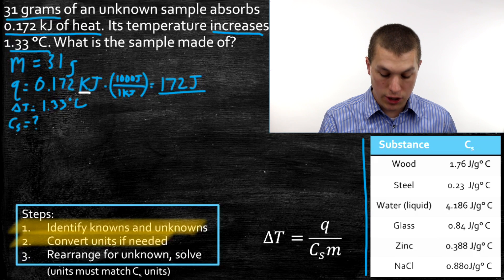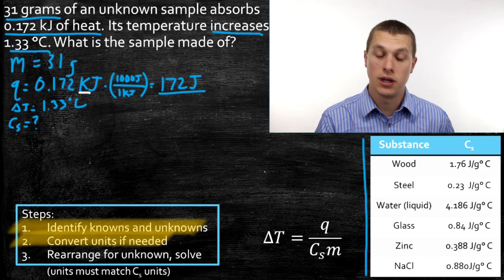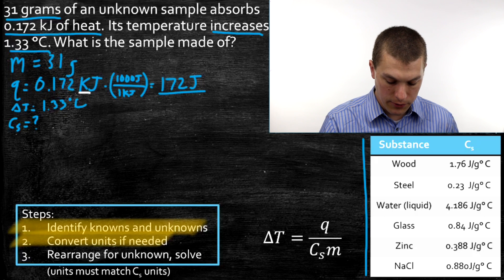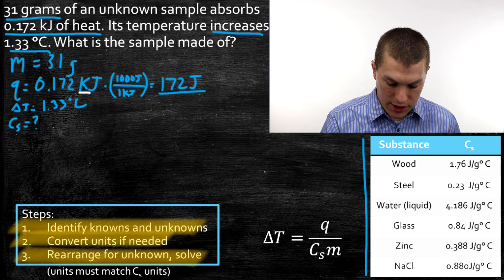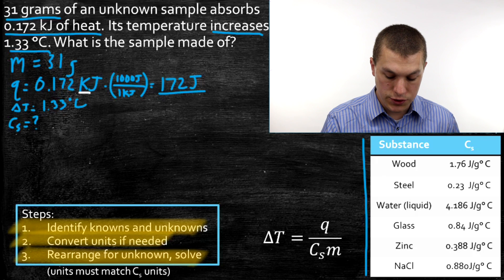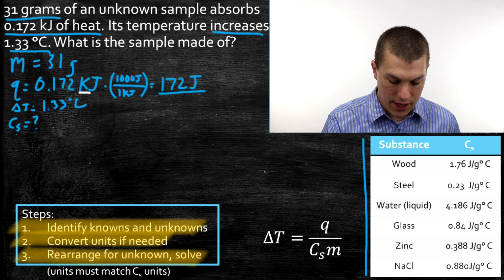Now we check out our temperature change. It's in degrees Celsius, so we're good on units there. So we go to step three. Rearrange for our unknown and solve. Our equation that we're given is delta T equals Q divided by Cs times m.